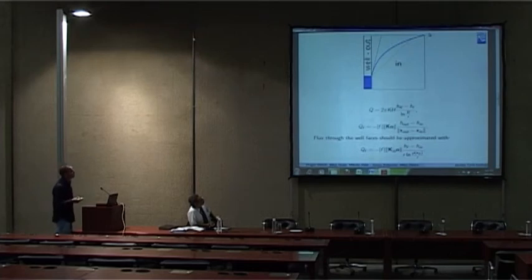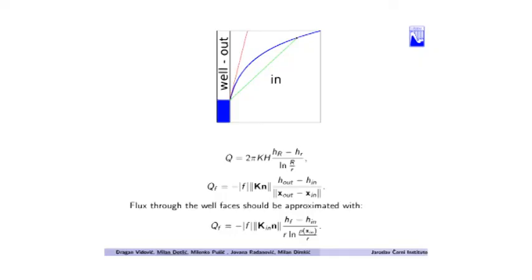The derivative of the well function is very sharp near the well, so it is not well approximated with finite difference. Because of that, some kind of correction is needed. The classical workaround is the Peaceman model.